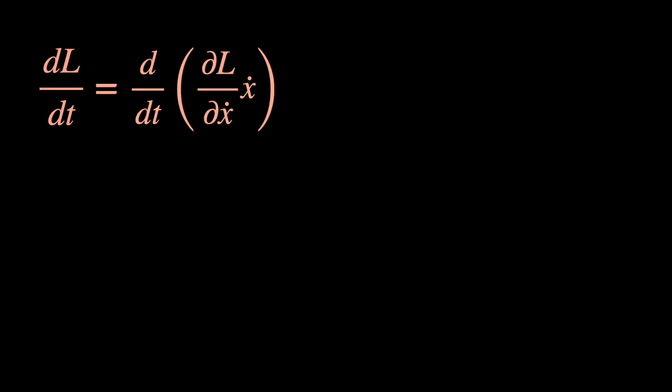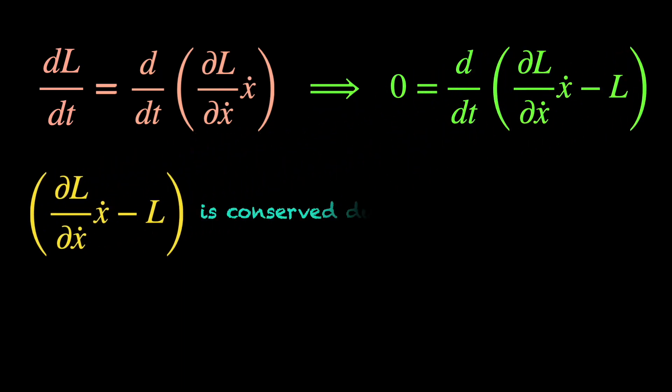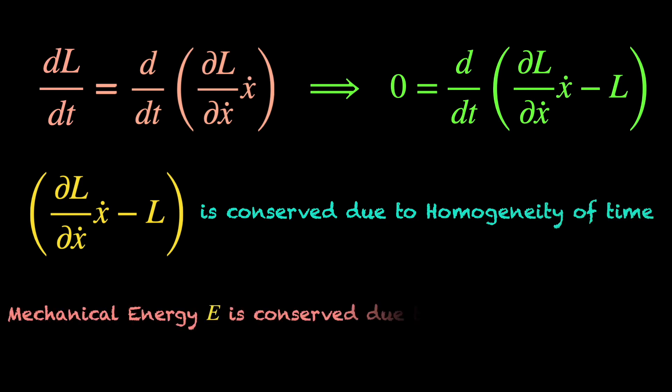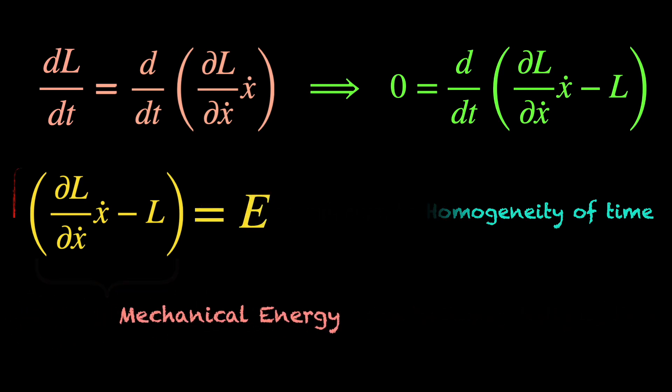It is quite obvious now what we need to do to make this equation look like a conservation law. We bring everything over to one side to write d dt of del L del x dot times x dot minus L equals 0. Which makes del L del x dot times x dot minus L the conserved quantity connected to the symmetry of homogeneity of time. But we have already discussed that homogeneity of time makes mechanical energy the conserved quantity. So, that entity del L del x dot times x dot minus L must be the definition of energy of the system in terms of its Lagrangian.